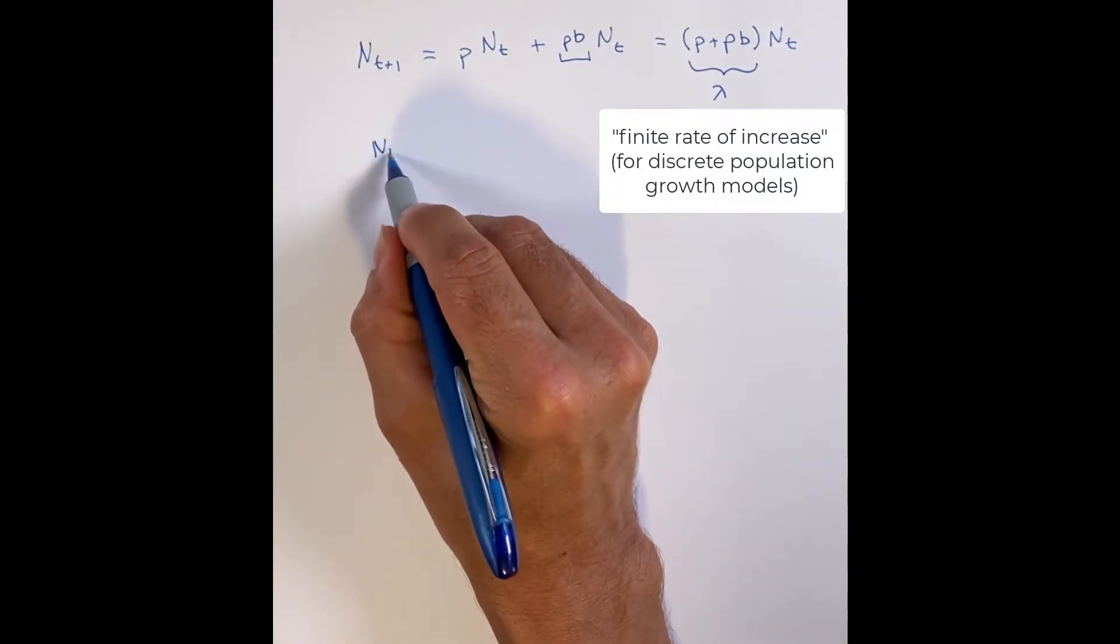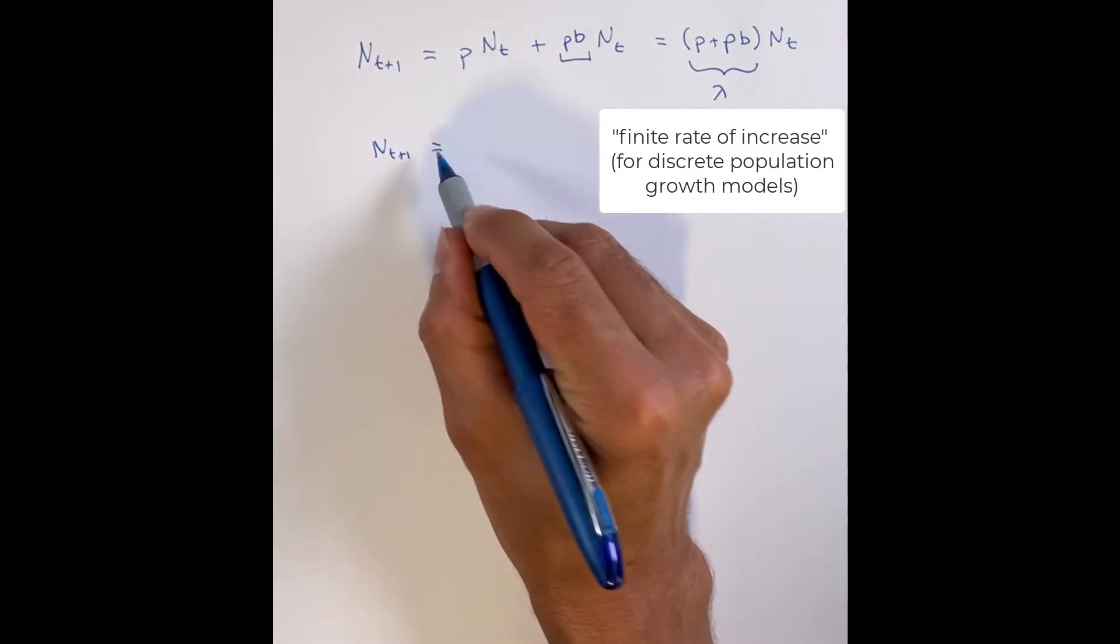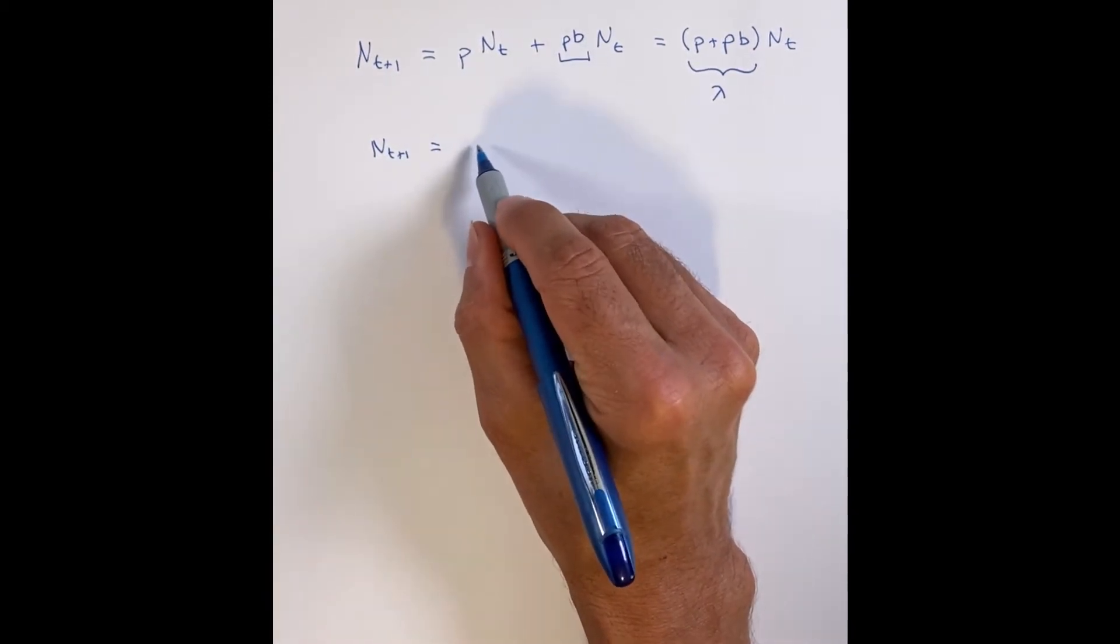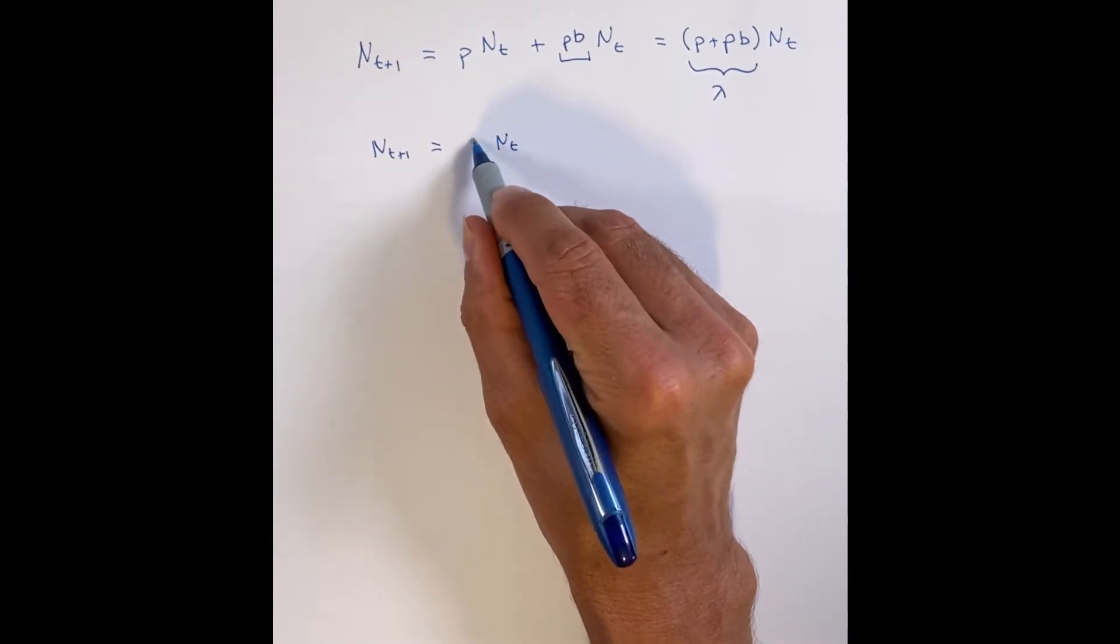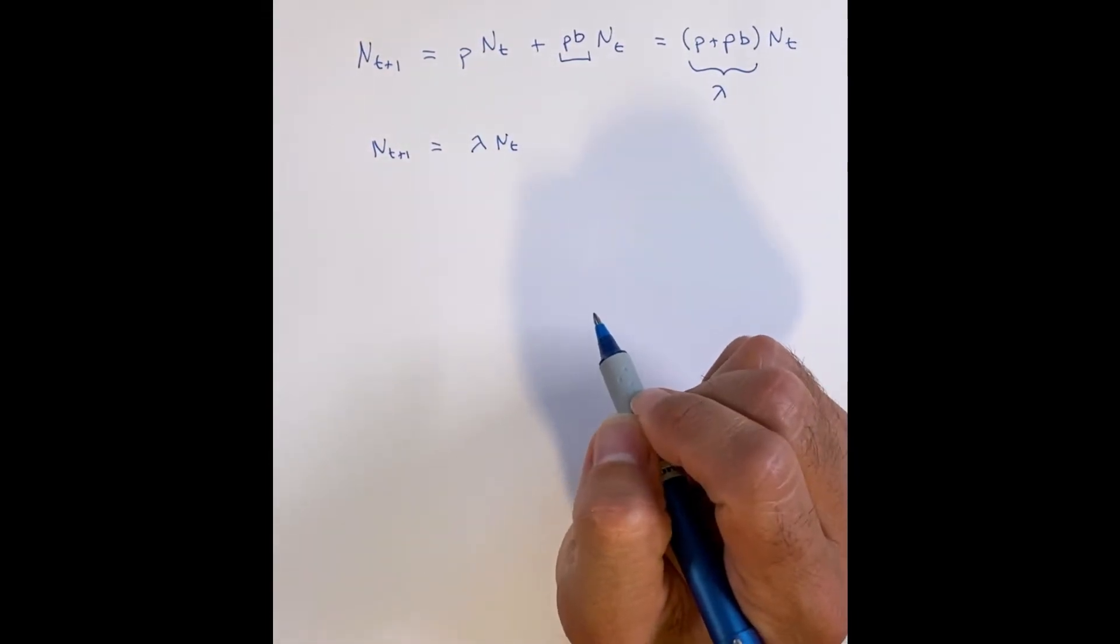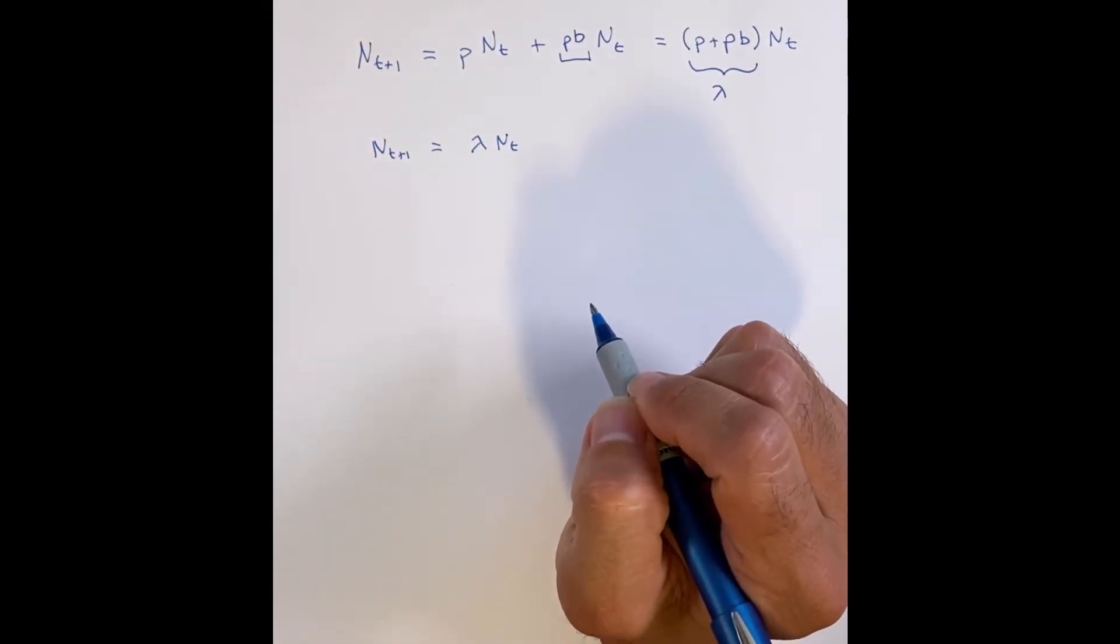That is, if you take that number lambda and you multiply it by how many individuals are there to start with, you will figure out how many individuals are going to be in the next generation t plus one.